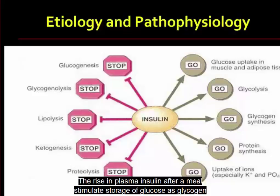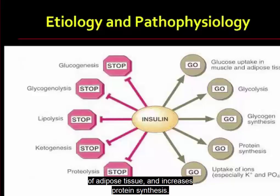which allows the transport of glucose into the cells to be used for energy. The rise in plasma insulin after a meal stimulates storage of glucose as glycogen in the liver and muscle, inhibits gluconeogenesis, enhances fat deposition in adipose tissue, and increases protein synthesis.